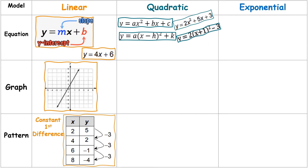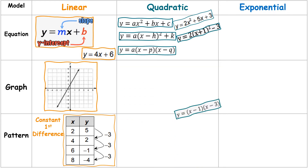In vertex form, the 1 and the negative 3 would be your h and k, which gives you the vertex. Your a is in front of the parentheses, whereas in standard form a is right next to the x squared term. Then we have factored form — here's an example of that as well.